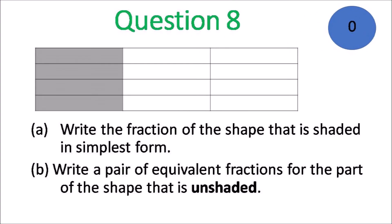Question 8, part A: write the fraction of the shape that is shaded in simplest form. Part B: write a pair of equivalent fractions for the part of the shape that is unshaded.